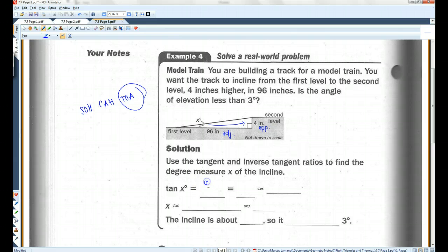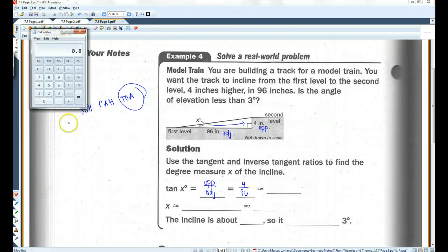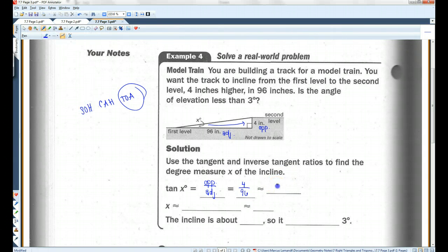So, tangent of X, opposite over adjacent. The opposite side is 4 inches. The adjacent side is 96. 4 divided by 96. So, X is approximately, I am going to add a step in here, just in case somebody is confused.